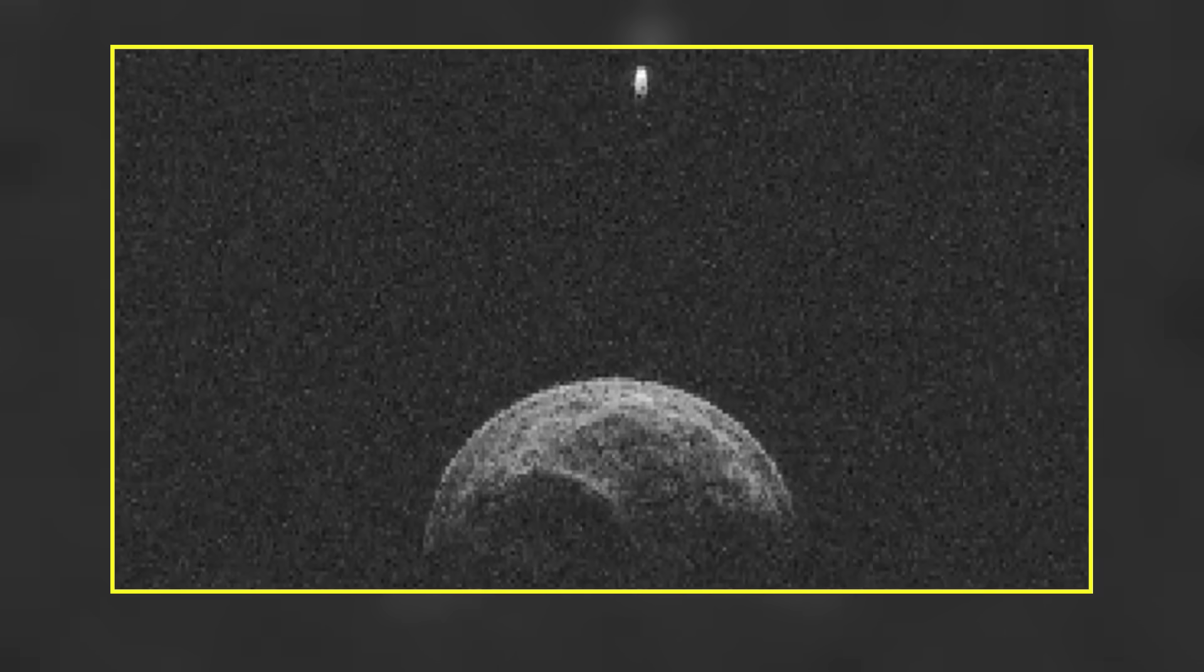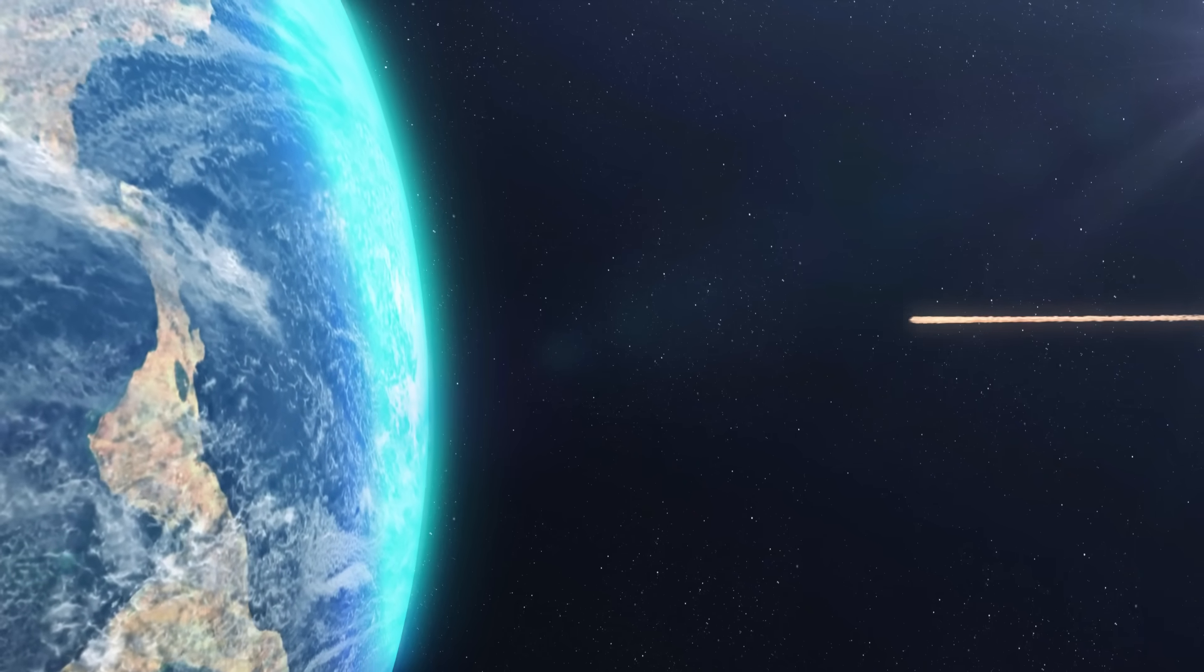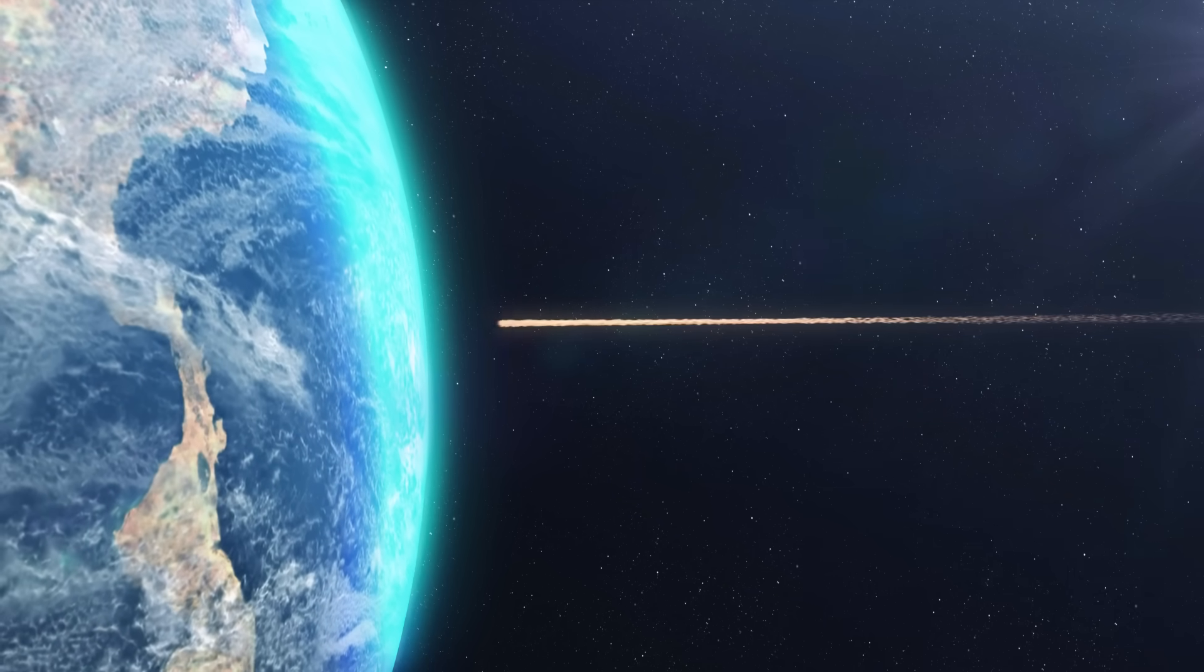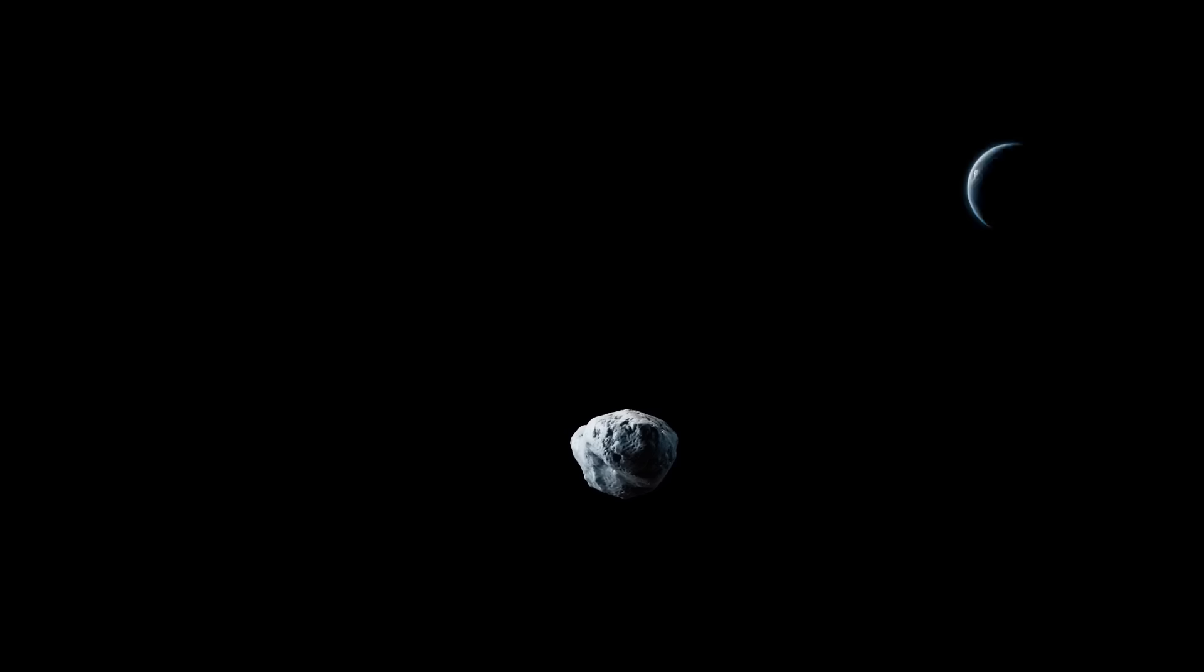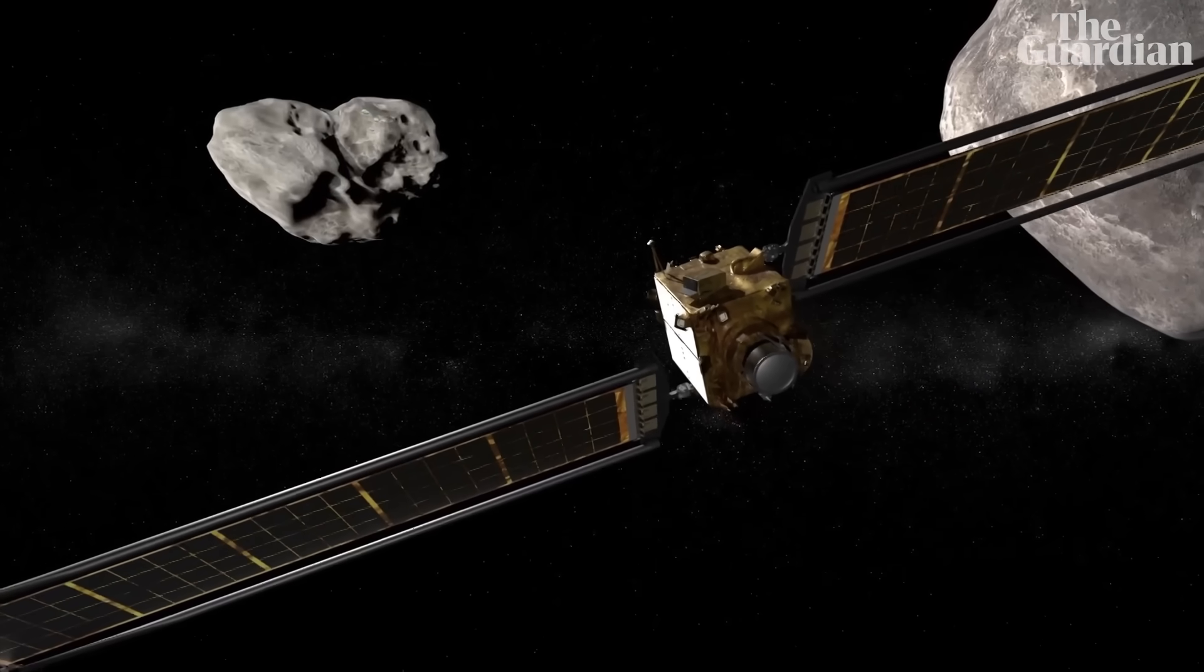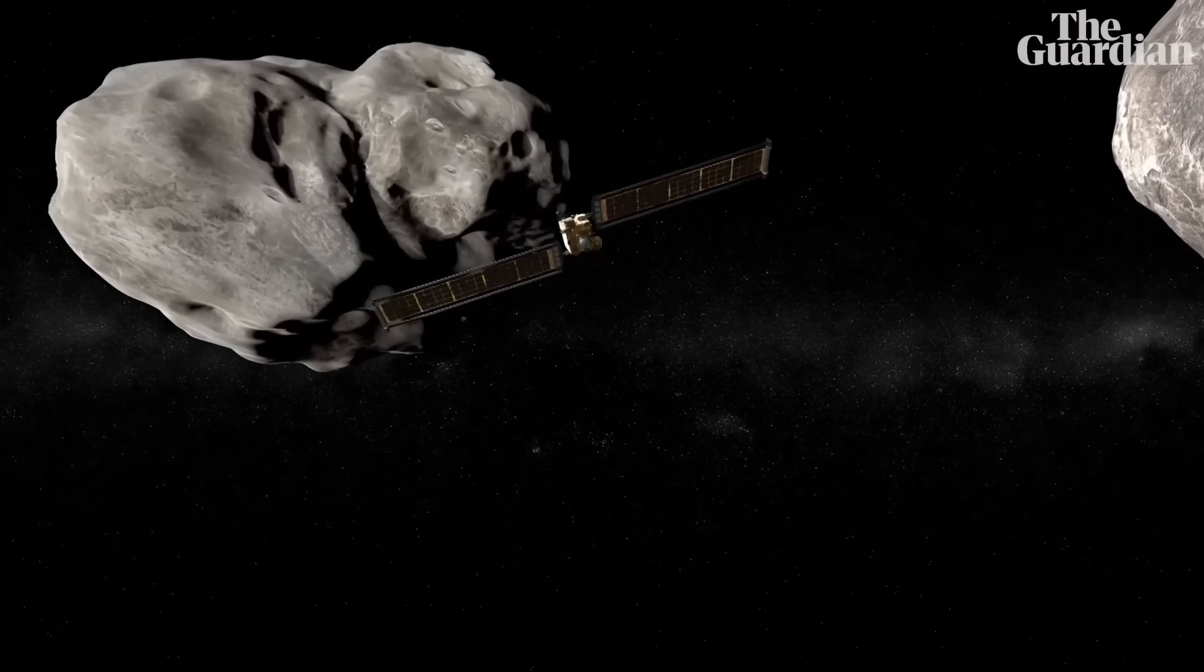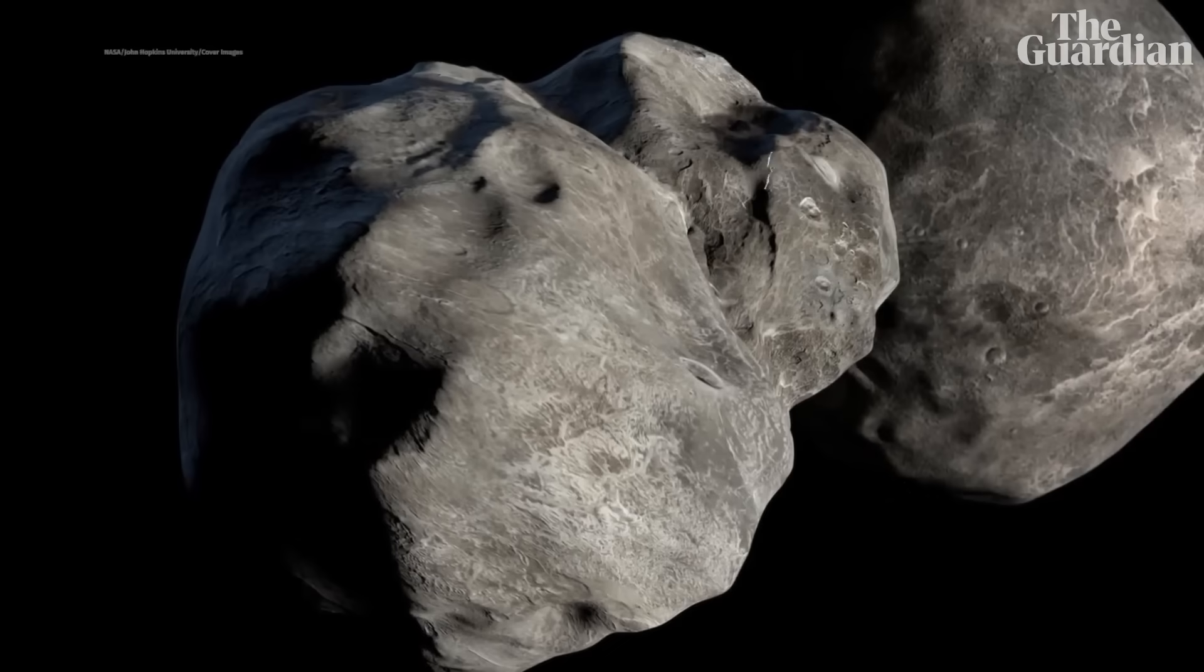Now back to the space rock. What if future observations confirm that asteroid 2024 YR-4 is on a collision course with Earth on December 22, 2032? First, the potential impact is still years away. Plus, we've already tested our ability to deflect an asteroid. In 2022, NASA's double asteroid redirection test successfully struck Dimorphos, a moon of an asteroid, demonstrating planetary defense in action.